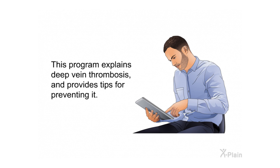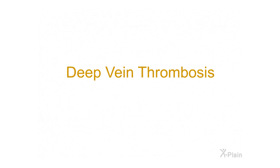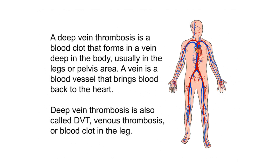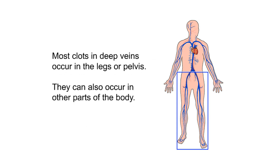Deep vein thrombosis: A deep vein thrombosis is a blood clot that forms in a vein deep in the body, usually in the legs or pelvis area. A vein is a blood vessel that brings blood back to the heart. Deep vein thrombosis is also called DVT, venous thrombosis, or blood clot in the leg.